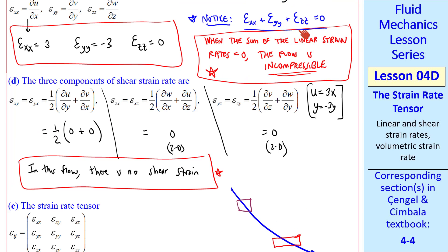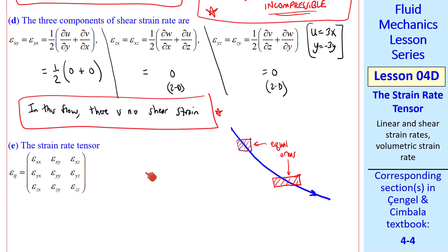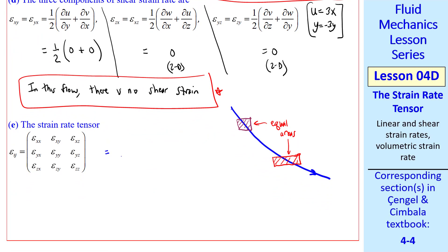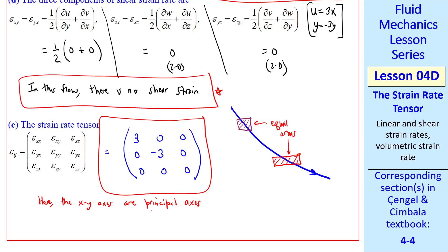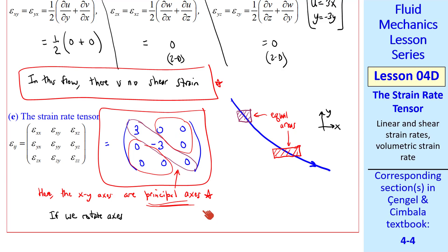Furthermore, since the sum of the linear strain rates is zero, this flow is incompressible, meaning the area of the particle is conserved as it moves and distorts. There is also no net rotation, so the flow is irrotational. The final part is to calculate the strain rate tensor. We plug in all the components and get the result. Here the xy axes are principal axes since we have non-zero diagonal components but all off-diagonal components are zero. If we were to rotate the axes, the components would all change — this is the nature of tensors.